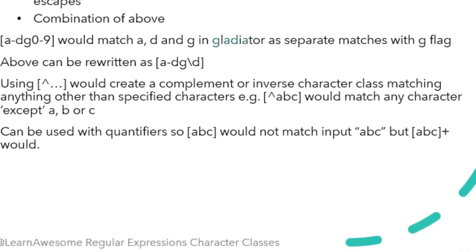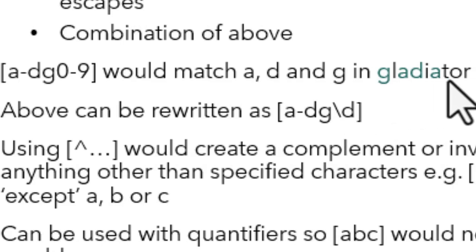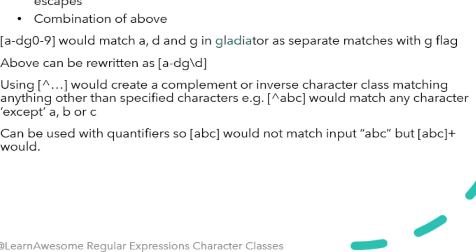Character class has a special prefix caret, which if provided at the start of the enclosed pattern, inverts the meaning of the character class. Using caret in the previous gladiator example would start matching letters l, i, t, o, and r instead of the previous g, a, and d. This is similar to the uppercase backslash D, backslash W, or backslash S escape sequences.